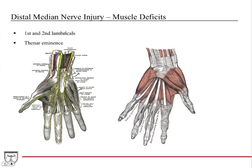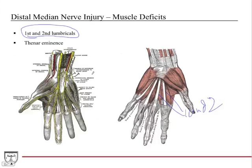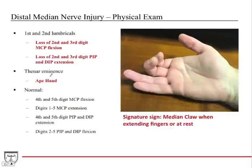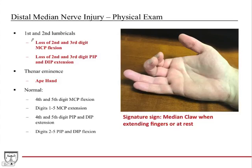The muscle deficits with distal median nerve injury are going to be the first and second lumbricals. The third and fourth lumbricals are going to be okay because those are ulnar nerve. The thenar eminence muscles that help flex and oppose the thumb are also going to be affected. Knowing the function of the lumbricals is so important because it really helps you identify these lesions and differentiate them.